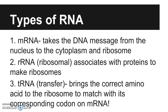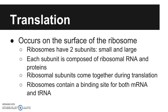In translation, this occurs on the surface of the ribosome. The ribosome starts reading after we have that AUG start codon. Ribosomes have two subunits — a small and a large — each composed of ribosomal RNA and proteins. The ribosomal subunits come together during translation and contain a binding site for both mRNA and tRNA. The mRNA starts reading first, and then the tRNA starts coming in and binding to the codon via something on it called an anticodon. The anticodon is complementary to the codon — A binds with U and C binds with G — and it brings in the amino acid.